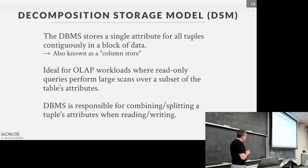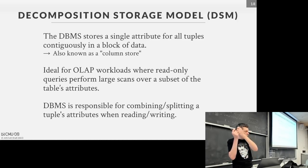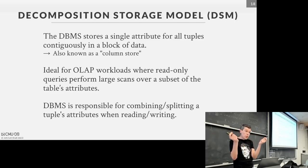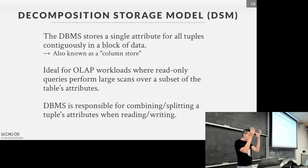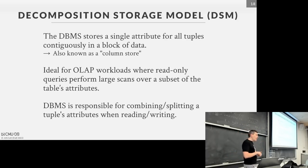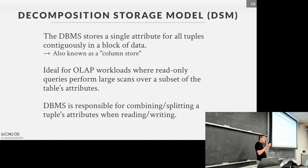The alternative is the DSM — Decomposition Storage Model, or column store. Instead of storing all attributes for a tuple together, we store all values for a single attribute across all tuples in a single page. So just the last login field has its own page, not intermixed with other attributes. This is ideal for OLAP queries because when I fetch a page from disk, I'm only getting data for the attributes I actually need.